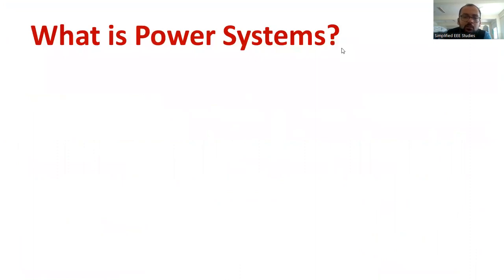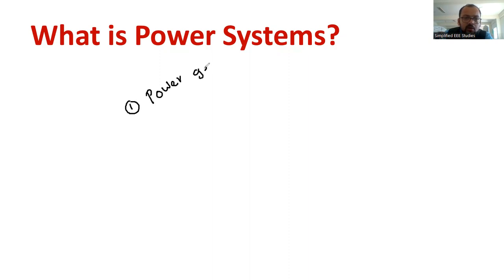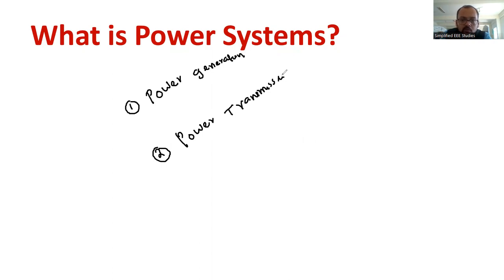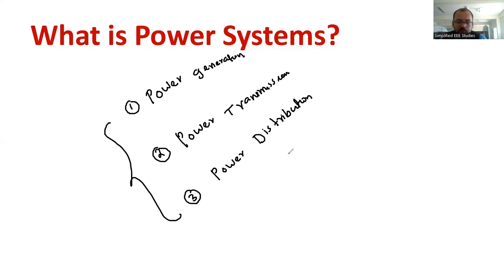First of all, I would like to discuss what is a power system. Power system is nothing but a group of interconnected network which comprises of power generation, power transmission, and power distribution. The combination of these three components is generally called as power system — you may call it as a grid also. All are interconnected.